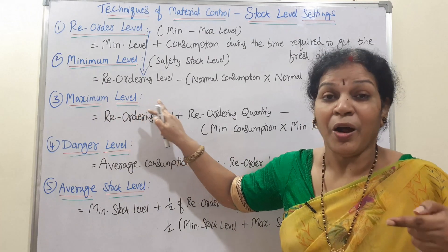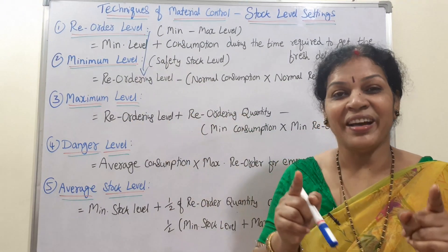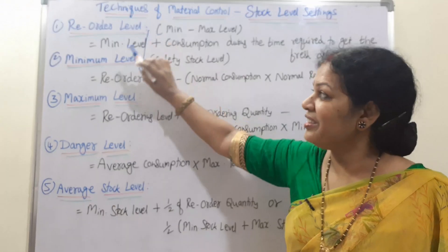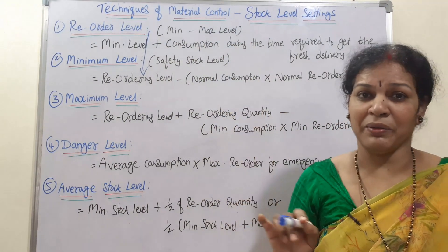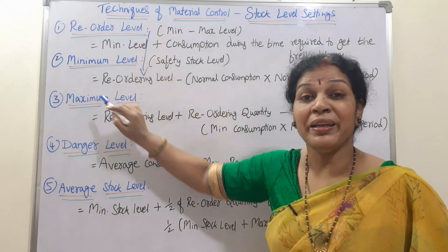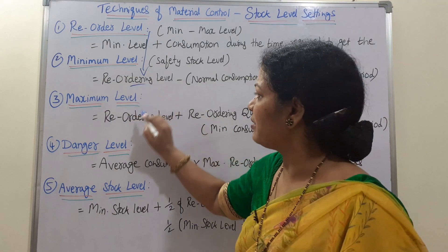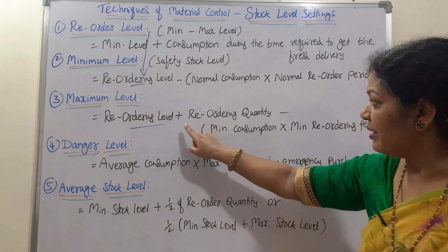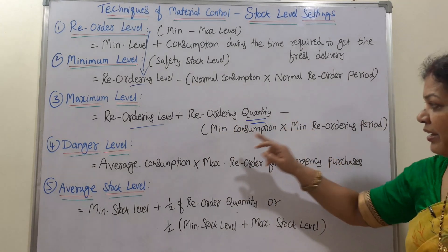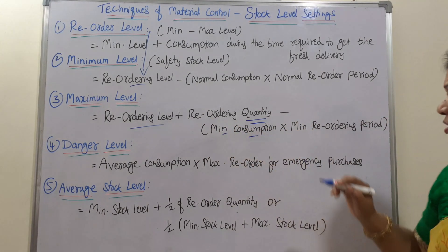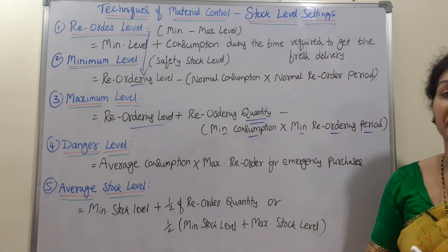How do we know the maximum level is 15,000? Through a formula. The formula is: reordering level plus reordering quantity minus minimum consumption into minimum reordering period. That is why reorder level is so important — both minimum level and maximum level depend on it. Every organization should not cross this maximum level.